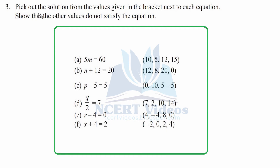Question three: pick out the solution from the values given in the bracket next to each equation, and show that the other values do not satisfy the equation. We have learned that only one value can satisfy a given equation. For 5m equal to 60: placing m equal to 10 gives 50, not equal to 60. Placing m equal to 5 gives 25, not equal to 60. So neither follows.